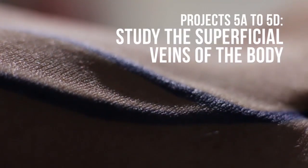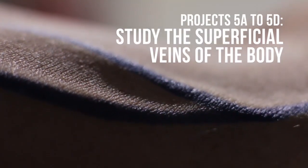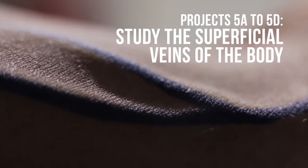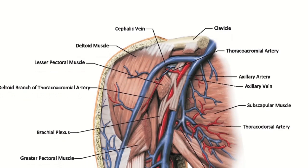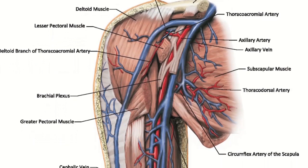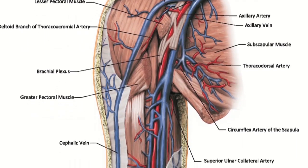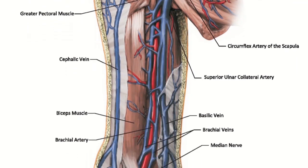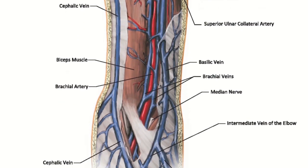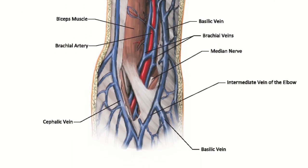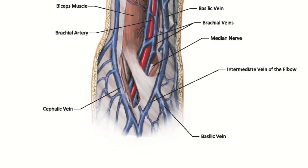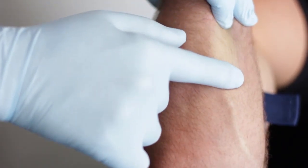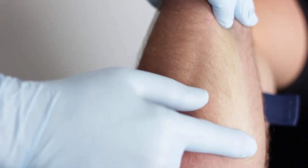Projects 5A to 5D study the superficial veins of the body. The veins of the arms are anatomically divided into two groups: superficial and deep. The superficial veins are located immediately beneath the skin, between two layers of superficial connective tissue fascia. For the purpose of this project, we will focus on the superficial veins.